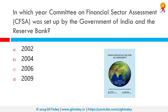In which year was the Committee on Financial Sector Assessment, or CFSA, set up by the Government of India and the Reserve Bank? The correct answer is 2006. This committee formed four independent advisory panels consisting of non-official experts to assist in the process and ensure an impartial analysis and assessment. The assessment reports were then peer-reviewed by reputed international experts, further enhancing the impartiality of the self-assessment.